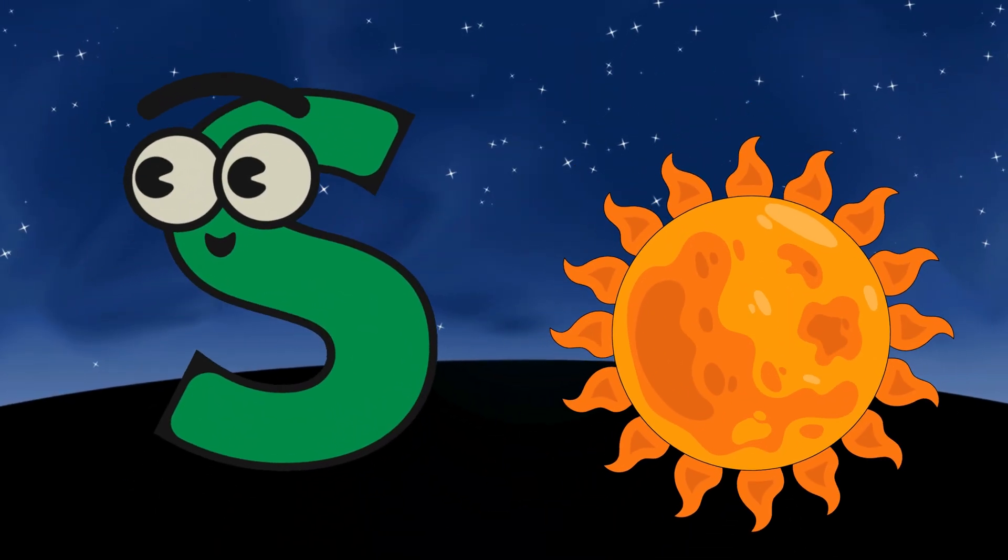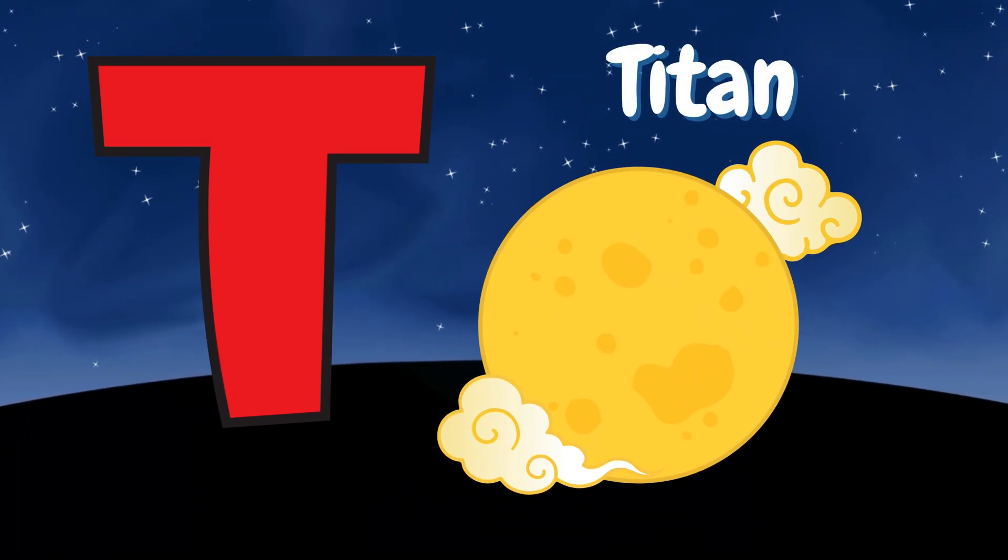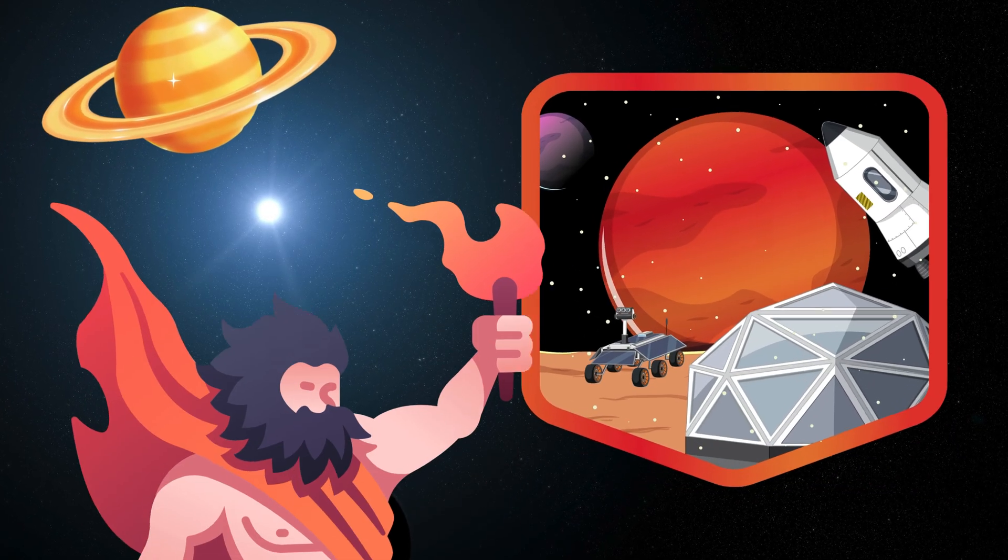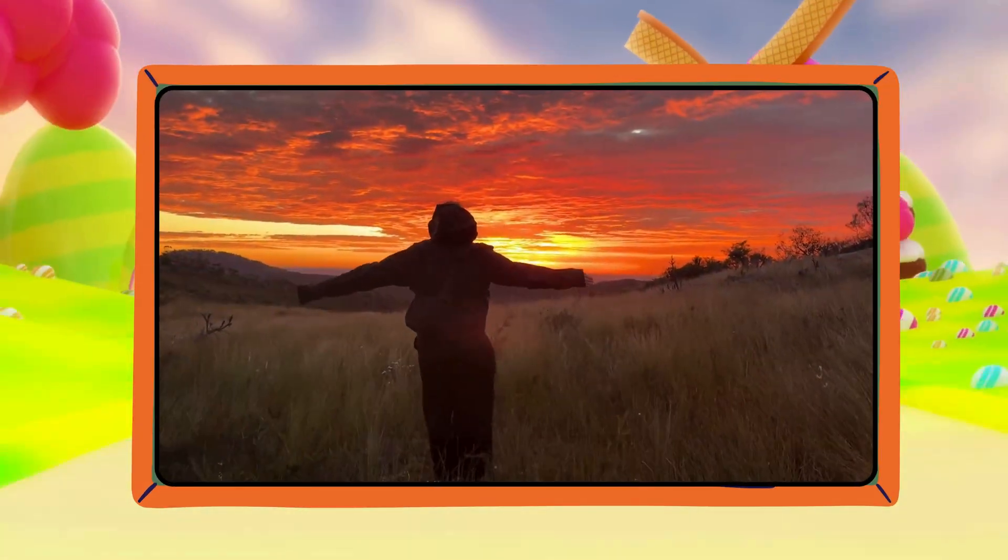S is for Sun. The sun keeps every planet warm and glowing. T is for Titan. Titan is Saturn's moon with golden clouds and lakes.